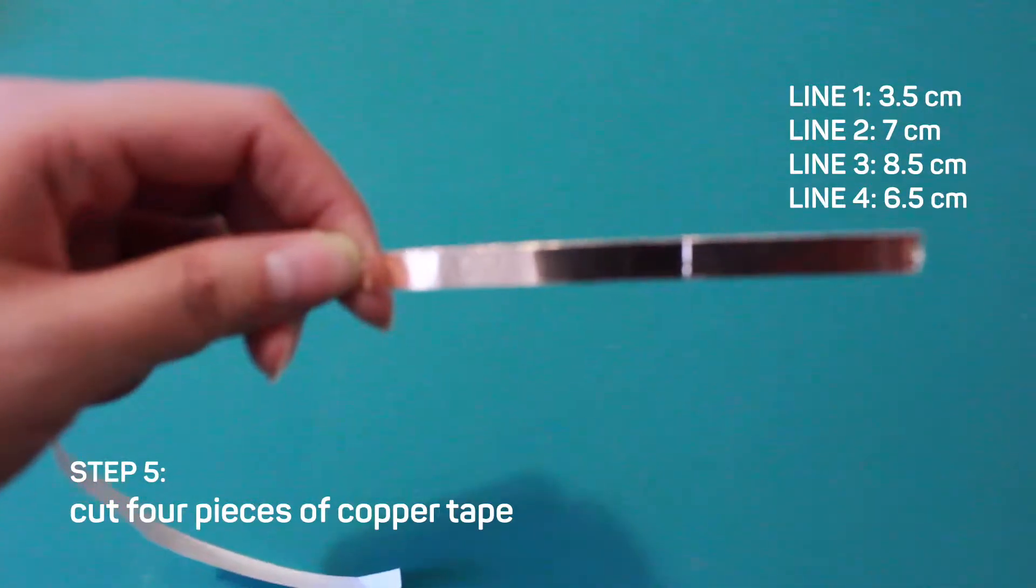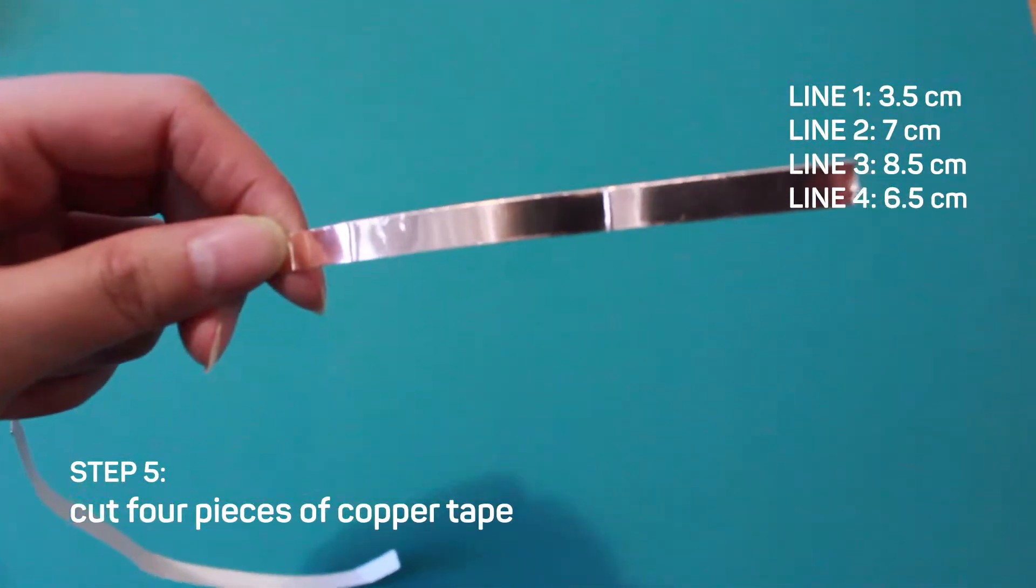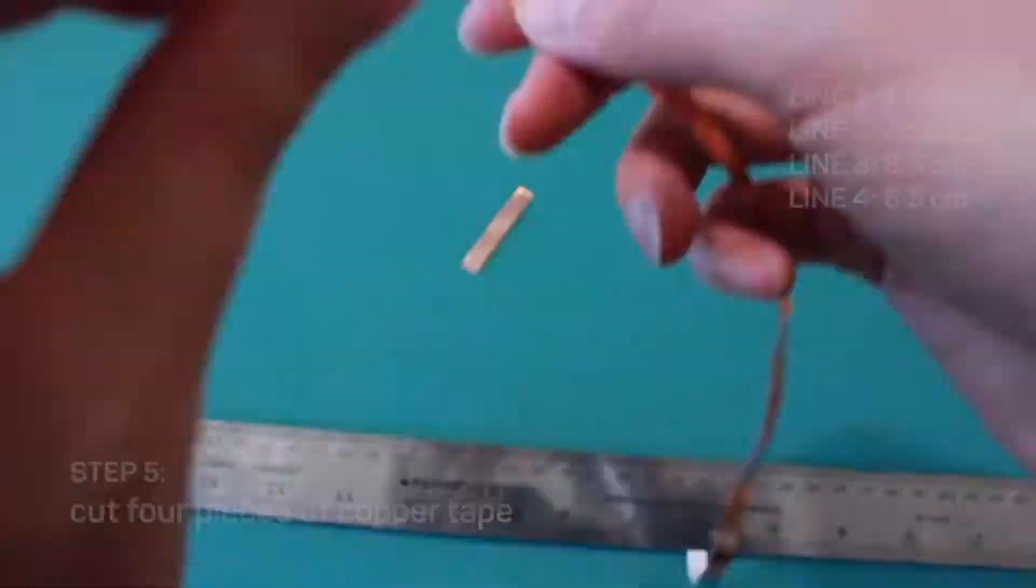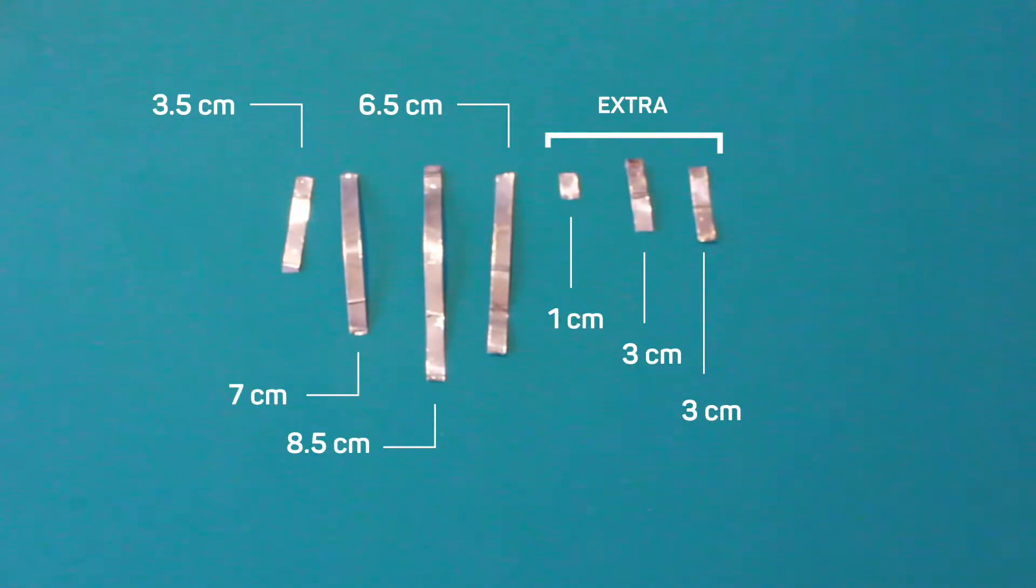Step five, cut four pieces of copper tape. Use a ruler to measure it out. Cut another three extra pieces.